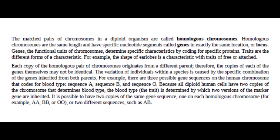Each copy of the homologous pair of chromosomes originates from a different parent. Therefore, the copies of each of the genes themselves may not be identical. The variation of individuals within a species is caused by the specific combination of the genes inherited from both parents. For example, there are three possible gene sequences on the human chromosome that codes for blood type: Sequence A, Sequence B, and Sequence O. Because all diploid human cells have two copies of the chromosome that determines blood type, the blood type, or the trait, is determined by which two versions of the marker gene are inherited.